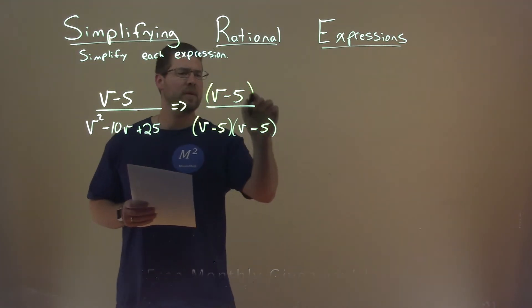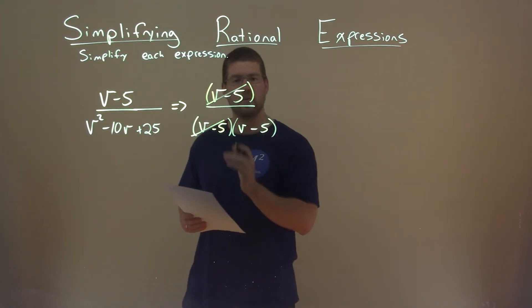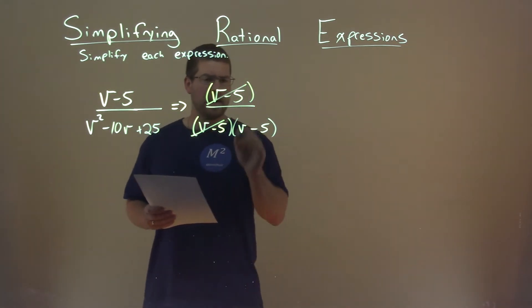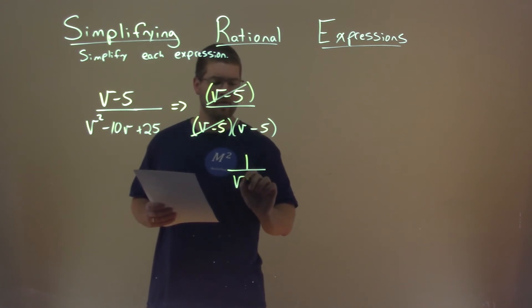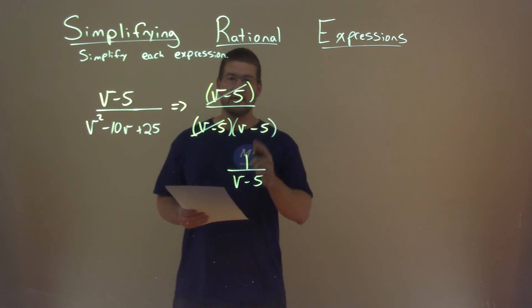Well, hopefully now we can see something. We can cancel one of these v minus 5s with the numerator into one in the denominator, and now we're left with 1 in the numerator, and then v minus 5 in the denominator. And 1 over v minus 5 is my final answer.